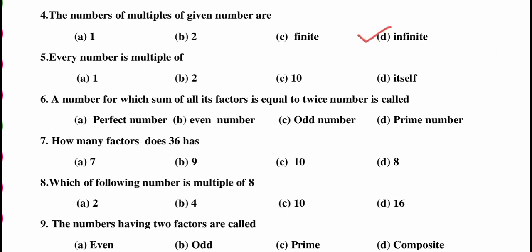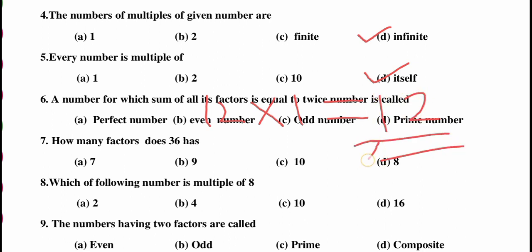Question 5: every number is a multiple of — 1, 10, or itself? The answer is itself. For example, 12 ones are 12, so 12 is a multiple of the number itself.